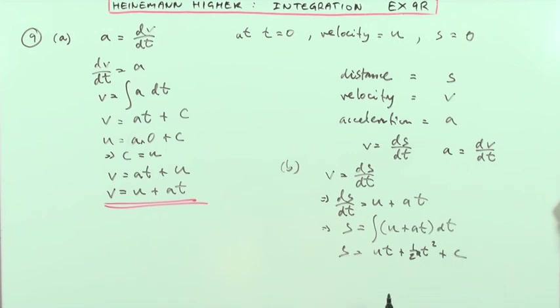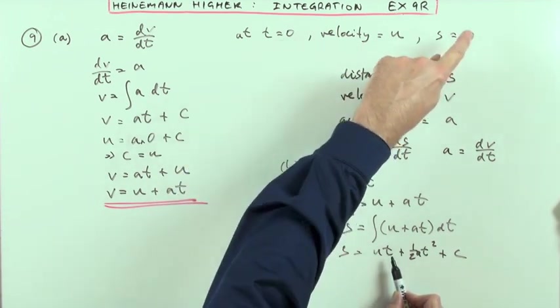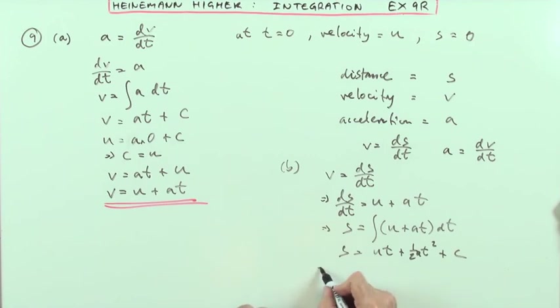That's where I need my initial values. Well at the start when t was 0, it hadn't moved yet. The distance was 0. Which means putting those points into it, I could put it over here, t0, s0 means that 0 equals, and that term will just be 0, and that term will just be 0. So c is just 0. Which means for this part then, s is going to equal just ut plus a half at squared.